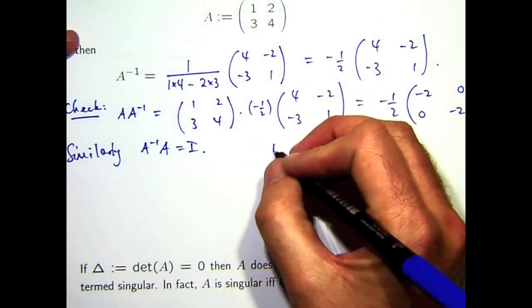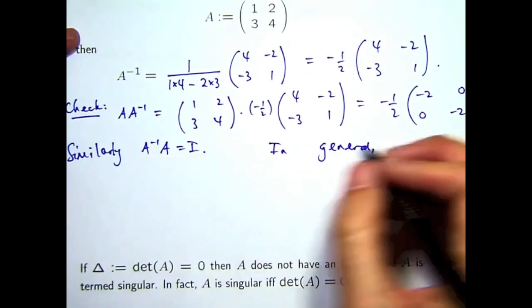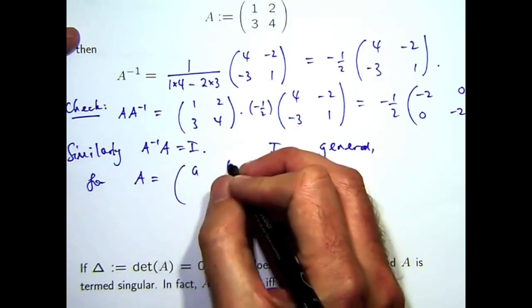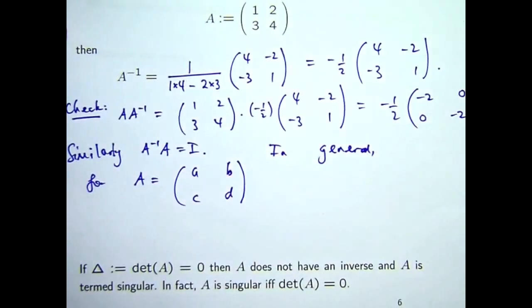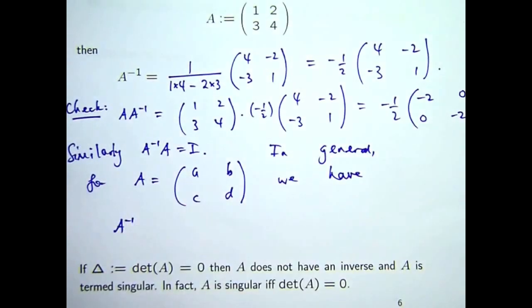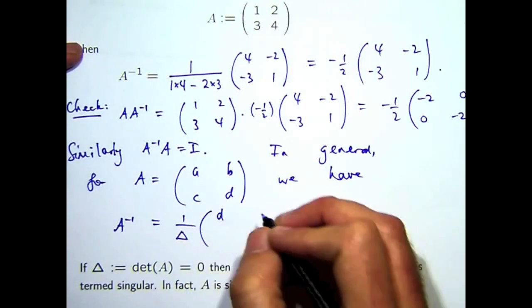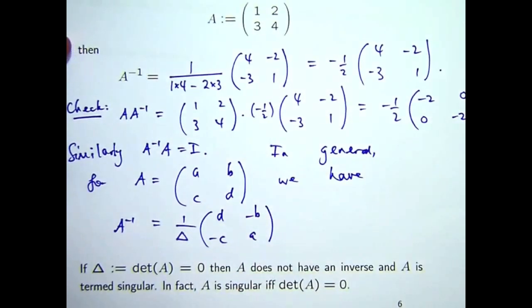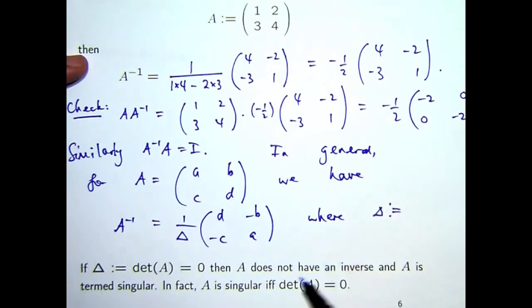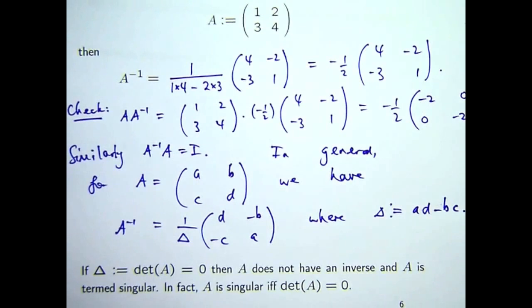So in general, let's just have elements a, b, c, and d. The inverse is just this matrix, where this little triangle is the determinant of A.